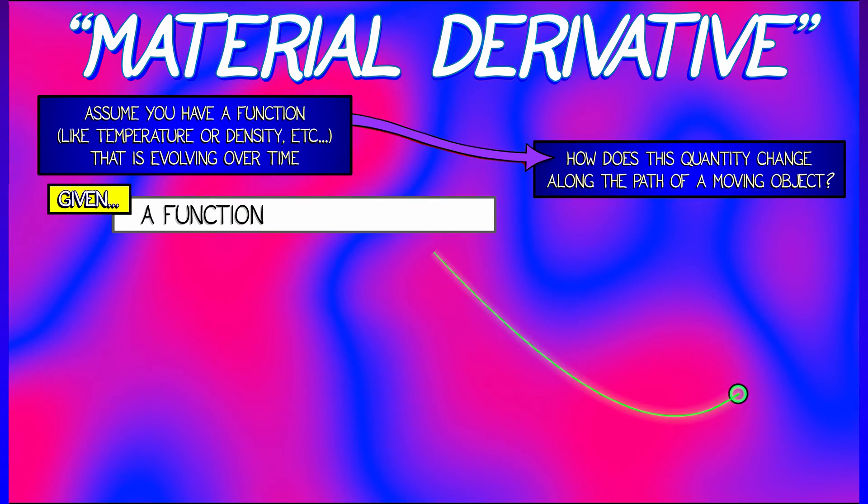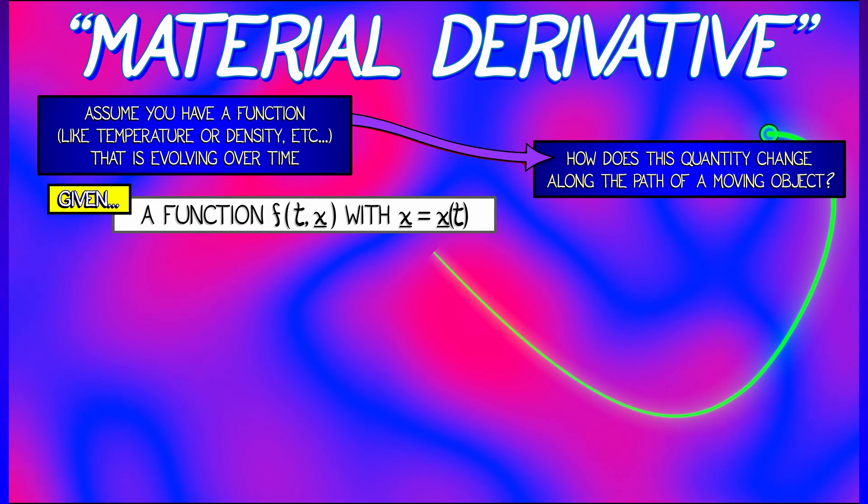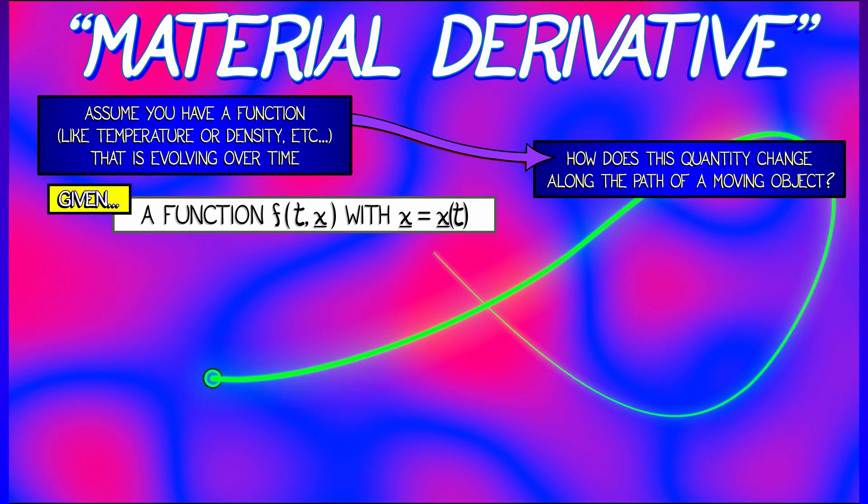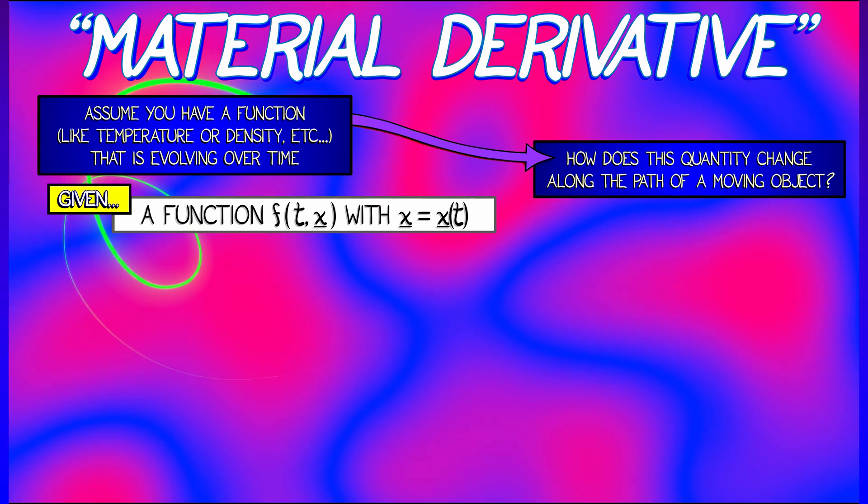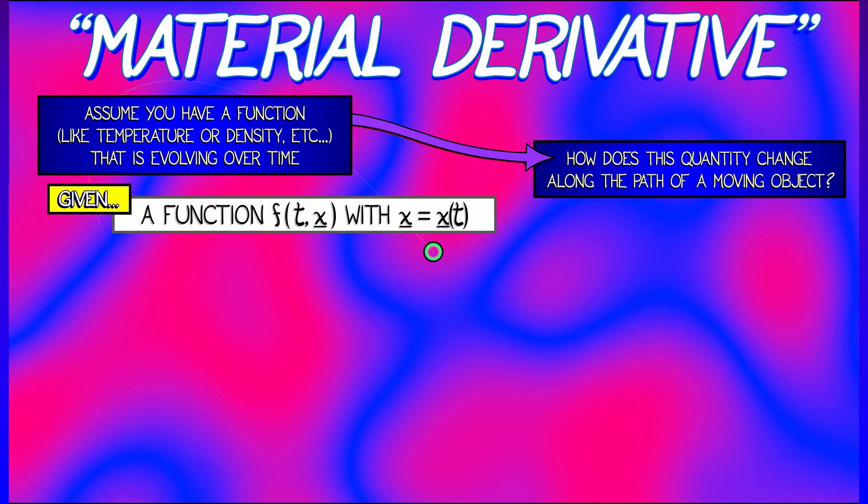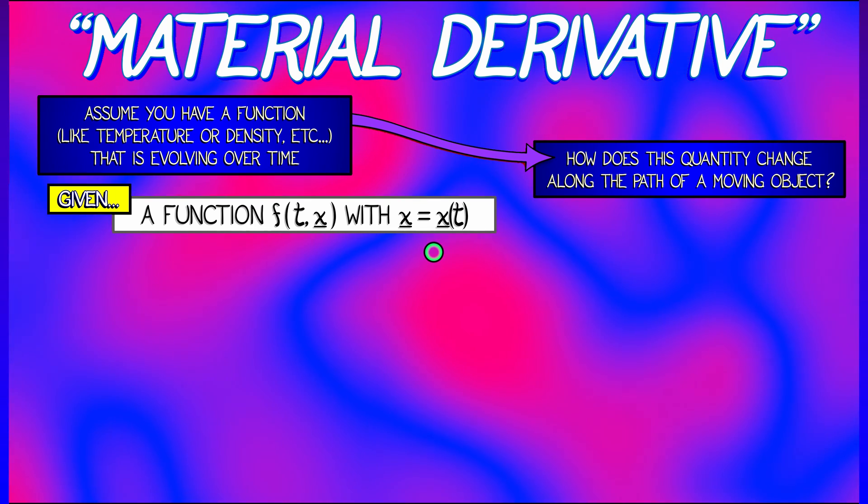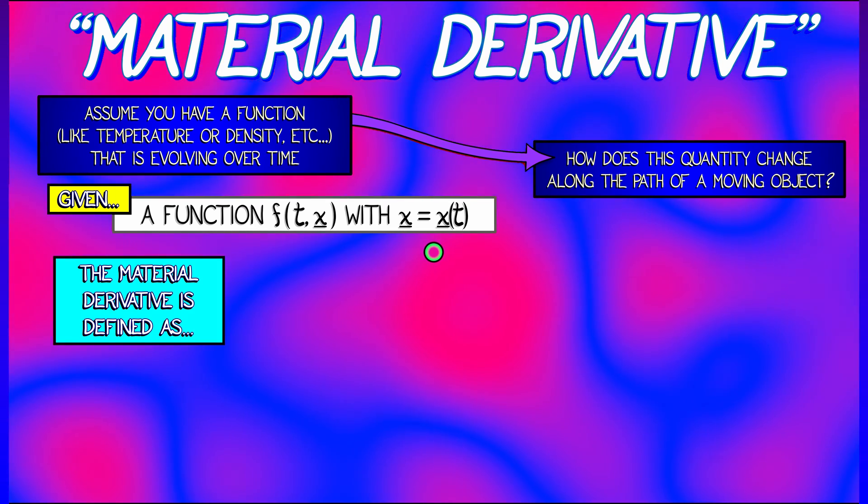Now, let's make this a little more specific. Let's say I have a function f that depends on time t and position x. But x also depends on time. It's the path of the particle.